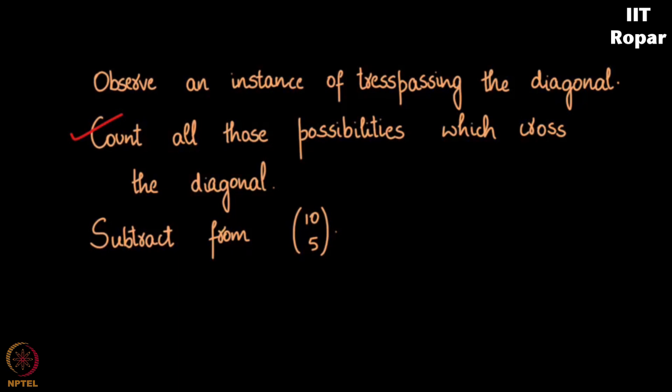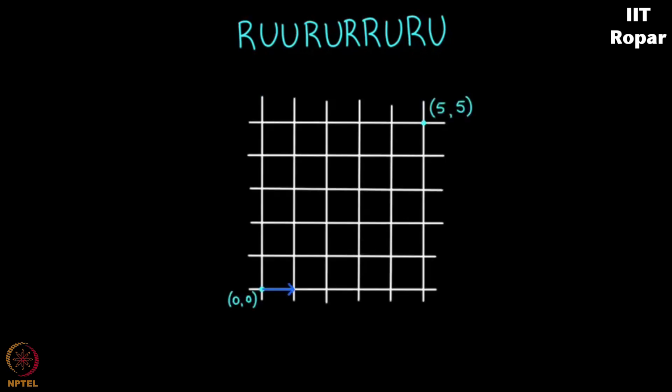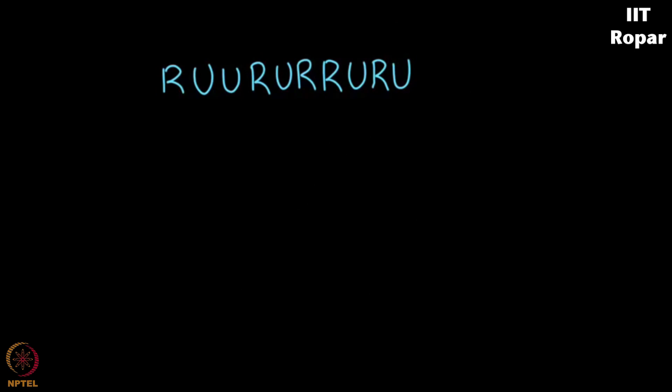Look at this: R, U, U, R, U, R, R, U, R, U. When you take a first step that is R you are well below the fence, and next when you take U you touch the fence, and another U you trespass the fence. And then you take a few more steps. Let me put a vertical line immediately after that state when you trespass the fence.